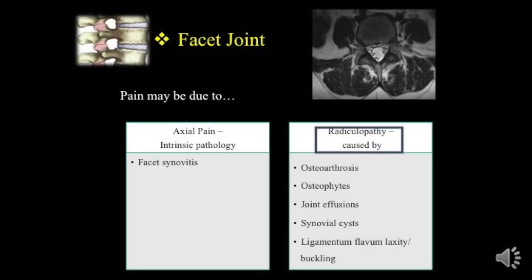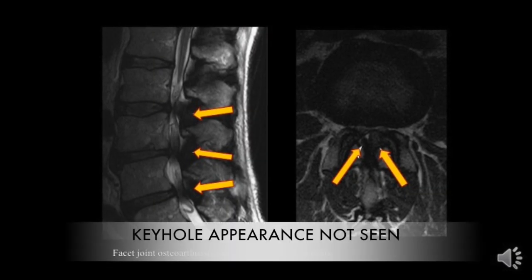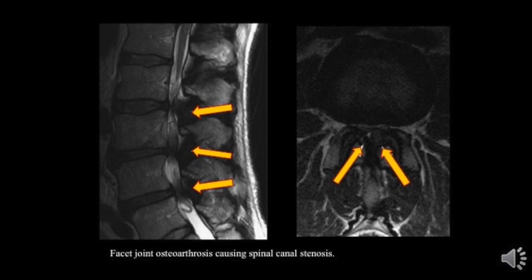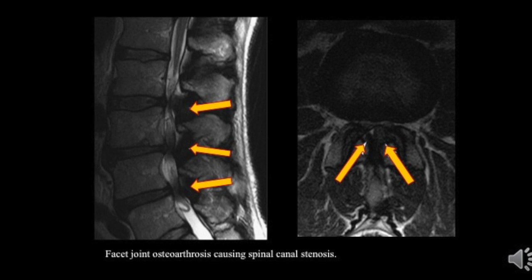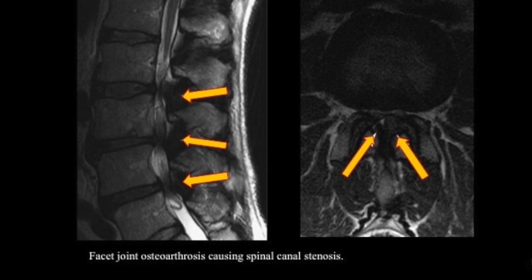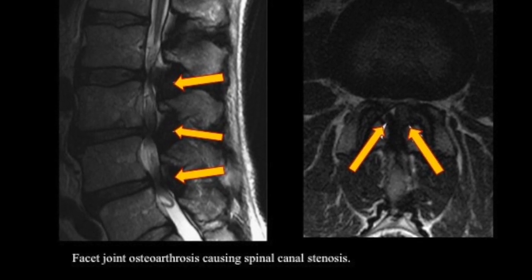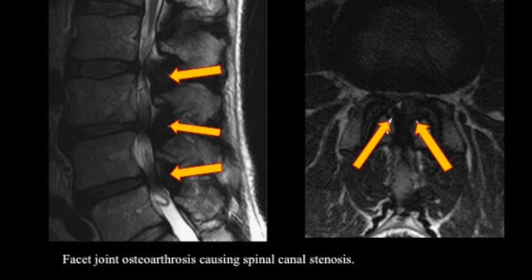Other causes of backache related to facet joints are due to mass effect. The most commonly seen is osteoarthrosis — erosion of the articular surfaces, subchondral erosions and cysts, better seen on CT but also visible on MRI. Periarticular hyperostosis, osteophytes, and joint space narrowing are noted. The keyhole appearance is very important to elicit on sagittal images and should be checked bilaterally. Joint subluxation, joint effusion, hypertrophy of ligamentum flavum, and intraarticular fragments — also known as joint mice — and vacuum phenomena may also be present.